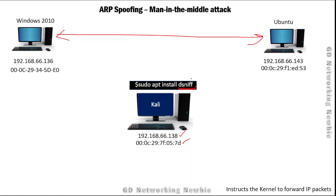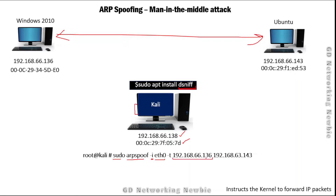After installing dsniff, we will run the command: sudo arpspoof, then specify the interface — eth0 for this Kali Linux machine — and then the target IP address, which is the Windows machine. The second IP address will be the Ubuntu machine. With this command, we are sending a message to the Windows machine claiming that we are 192.168.66.143 — that is, pretending to be Ubuntu.